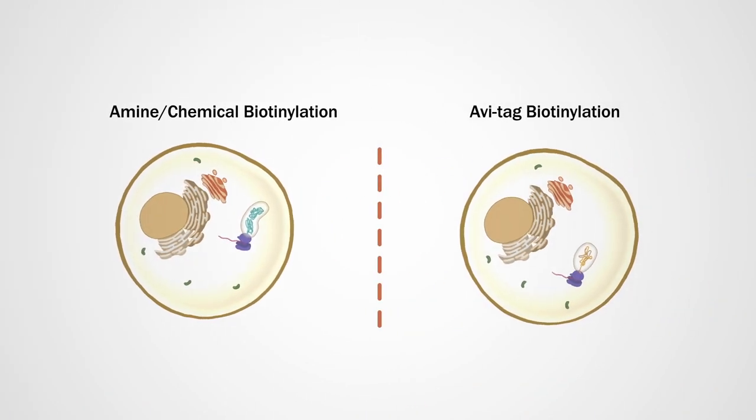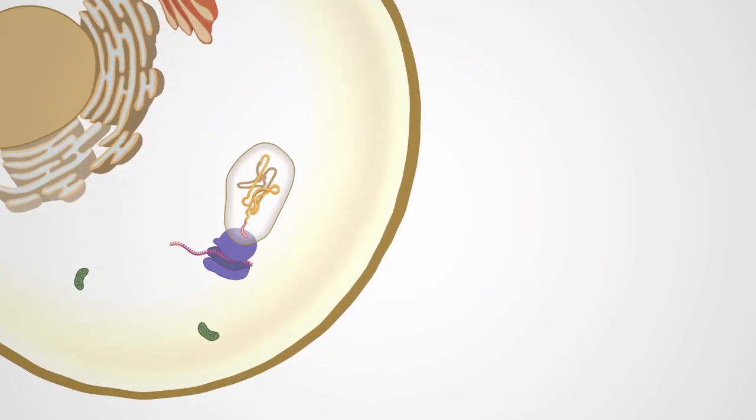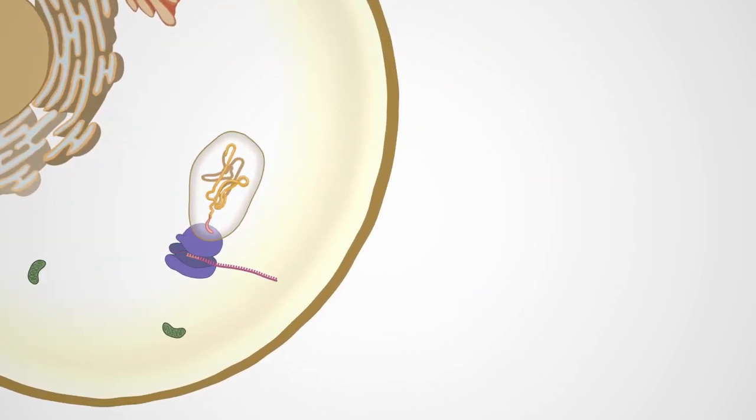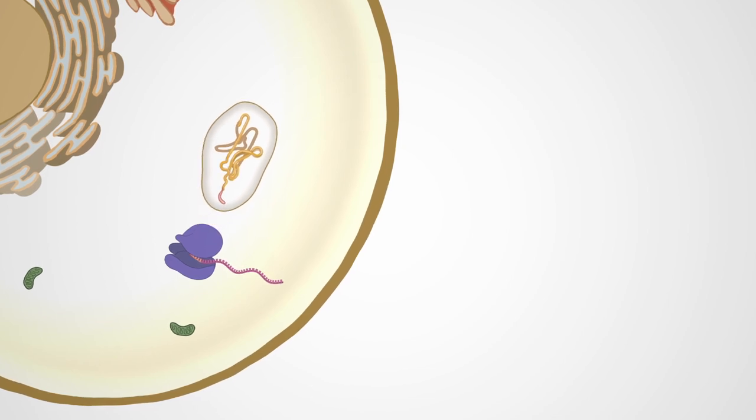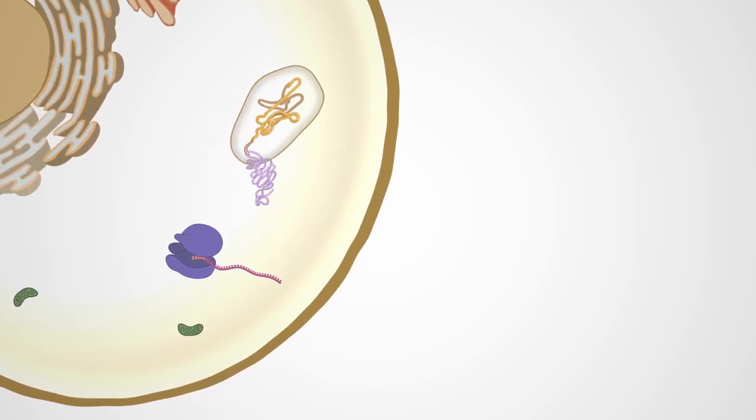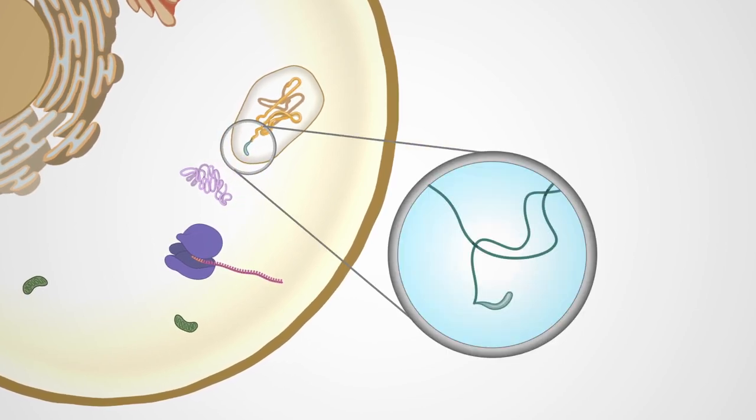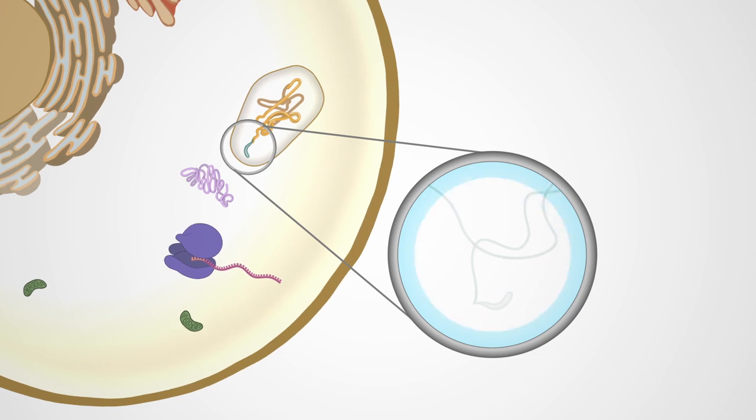For our aviTag biotinylated proteins, we insert an expression-optimized aviTag DNA sequence within the coding region of the expression vector. This produces an aviTag recombinant protein that is recognized by the E. coli BirA ligase, which enzymatically biotinylates the lysine residue contained within the 15 amino acid aviTag.